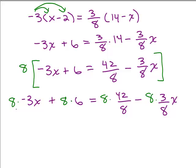So on the left-hand side, we don't have any fractions here so we have 8 times negative 3x is negative 24x. 8 times 6 is 48. The 8ths cancel here so I just have 42 and 8th cancel here as well so I just have minus 3x. So now we're down to a problem without any fractions and without any parentheses.